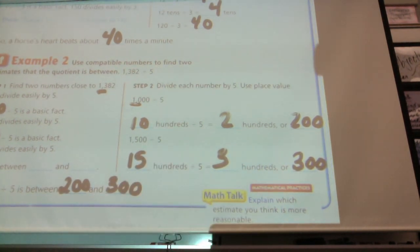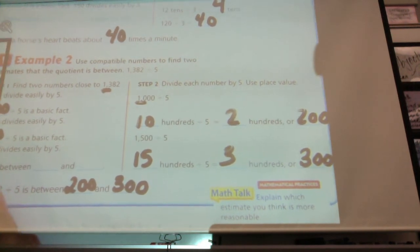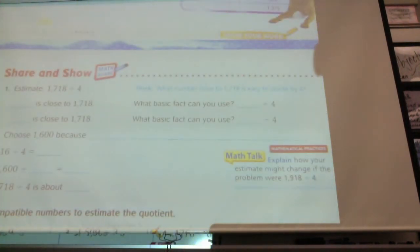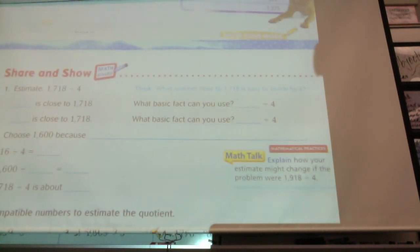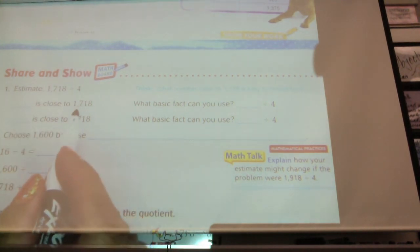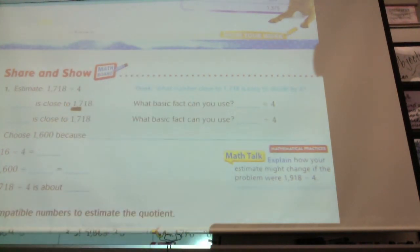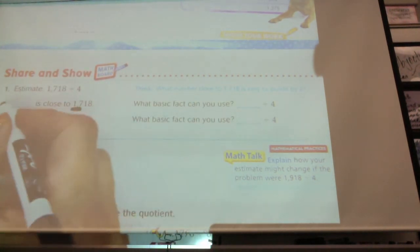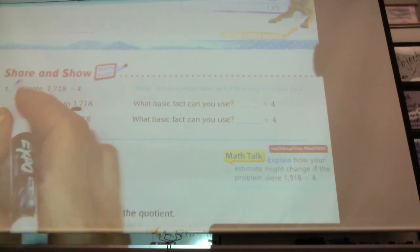Because we went down for this one and up for this one. So you should have been estimating 1,718 divided by 4. So what number is close to 17 that can be divisible by 4? What did you guys try for this one? Just one person. Rachel, what did you get? 1,600.